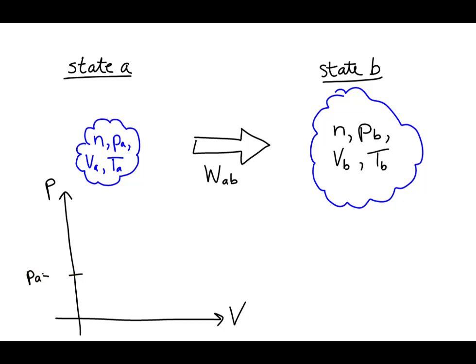Since this is an isobaric process, the gas pressure in state A is equal to its pressure in state B. In state A, the gas has volume VA. The gas then expands isobarically to volume VB in state B.